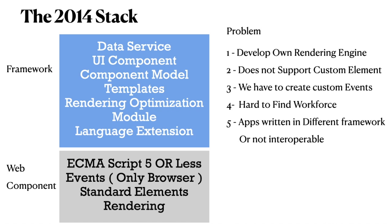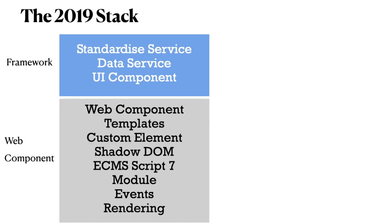Now let's discuss the 2019 web stack. In 2019, we have more web standards and less framework. More web standards means easier performance - it is very lightweight, built on top of HTML standards, supports native browsers, and when developing large-scale enterprise applications it is also very optimized. We also have multiple custom elements that we can create.